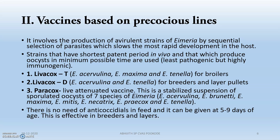Next are vaccines based on precocious lines. This involves the production of avirulent strains by sequential selection of the parasites — precocious selection using avirulent strains. There are mainly three: Levacox-T, Levacox-D, and Paracox. Sometimes we use a live attenuated vaccine, which is a stabilized avirulent suspension. There is no need for anticoccidials in feed, and it can be given at five to nine days. Whenever you are applying a coccidiosis vaccine, you should never give anticoccidials.